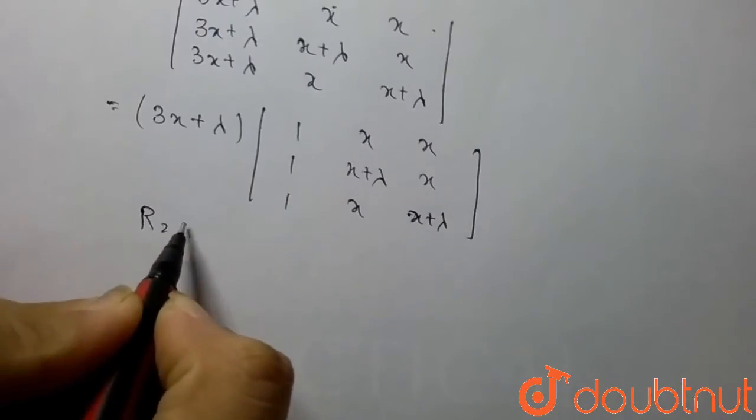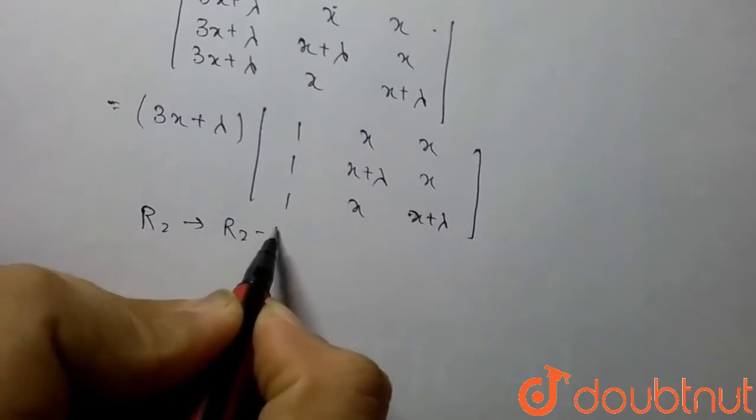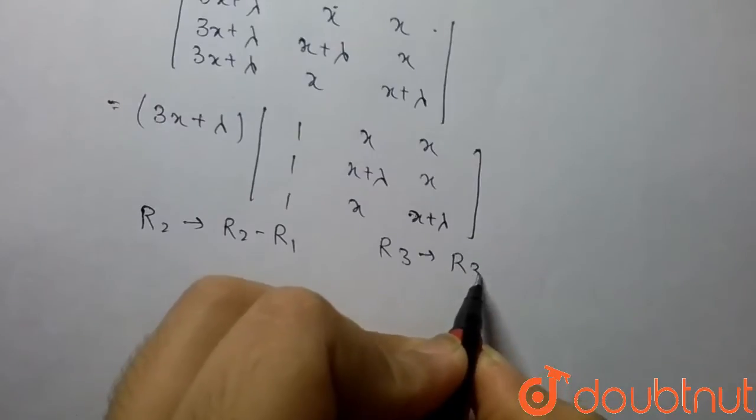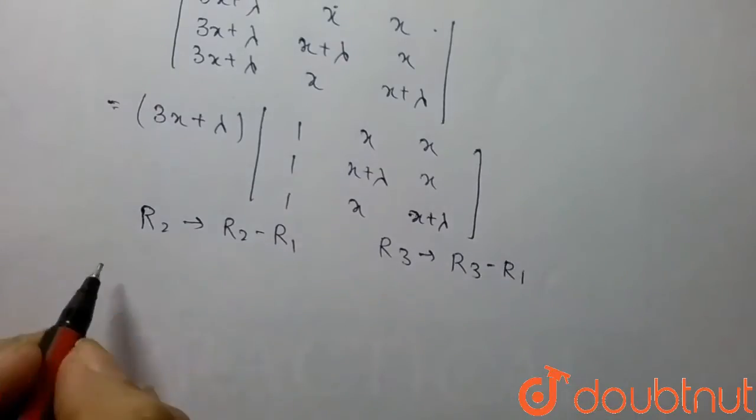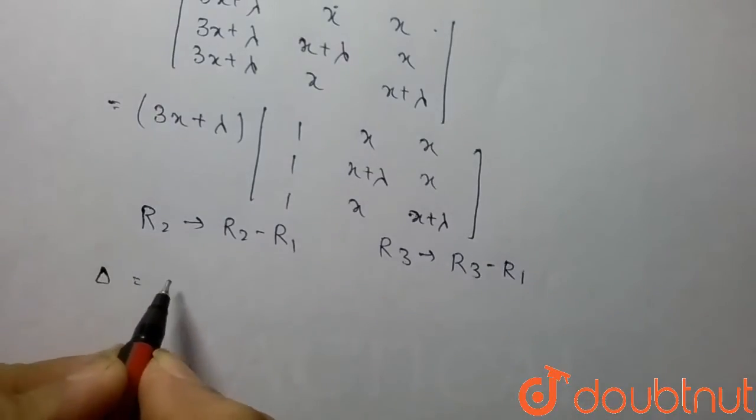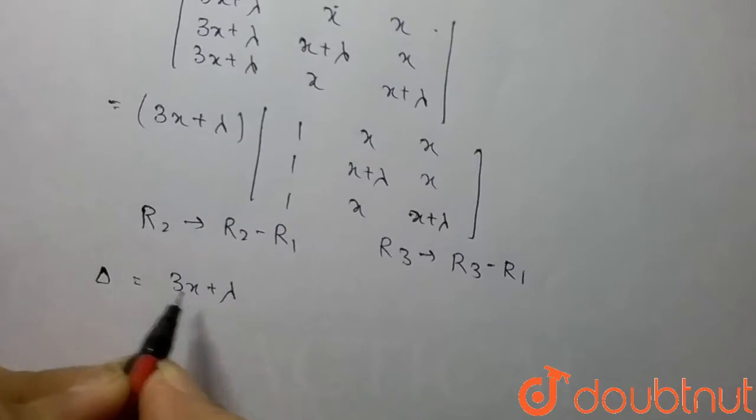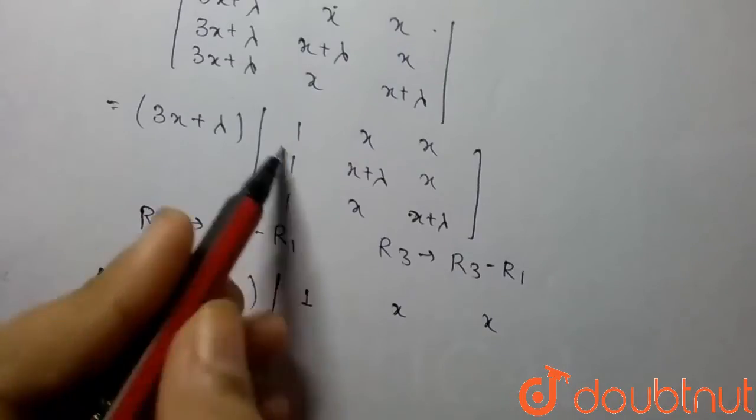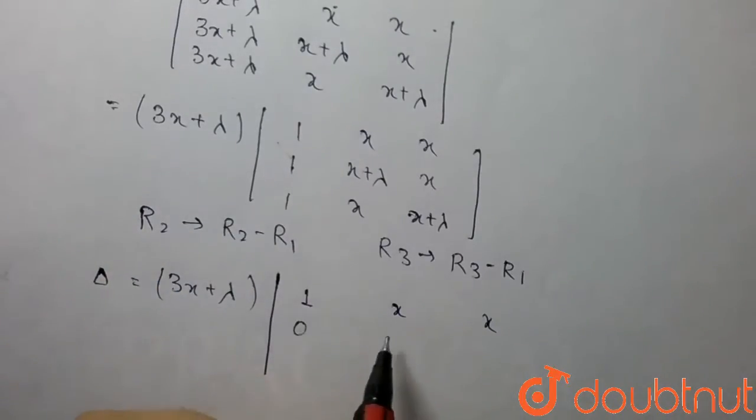Now we apply R2 = R2 - R1 and R3 = R3 - R1. The value becomes 3x+λ times a determinant. The first row remains the same. For the second row, 1 minus 1 becomes 0, this becomes λ, and this becomes 0.